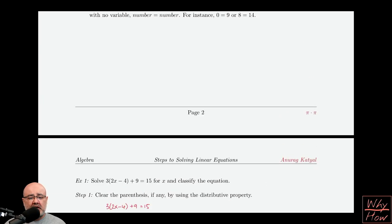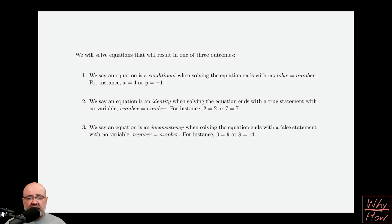Let me bring us back to this for a moment. There were three ways solving an equation could end, or three possible outcomes. The first was a conditional when you have a variable equaling a number. Another scenario is where you have no variables left over, and there are two possible outcomes there. It could either be a true statement where it's 2 equals 2 or 7 equals 7, or it could be some false statement where you have 0 equals 9 or 8 equals 14.